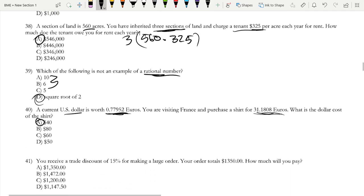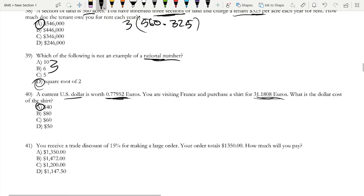You receive a trade discount of 15% for making a large order. Your order totals $1,350. How much will you pay? If you have a trade discount, you're retaining 85% of the value, so that is $1,350 times 0.85. Now all of these numbers—well not both, these two numbers are greater, so it's definitely not between these.